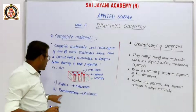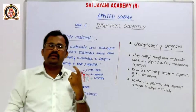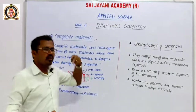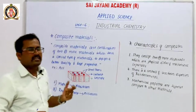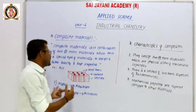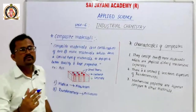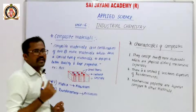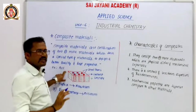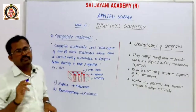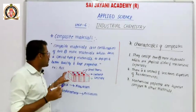The reinforcement is inserted in a small portion within the matrix. For example, in RCC, cement is the complete matrix. Cement concrete is very strong in compression but very weak in tensile strength.